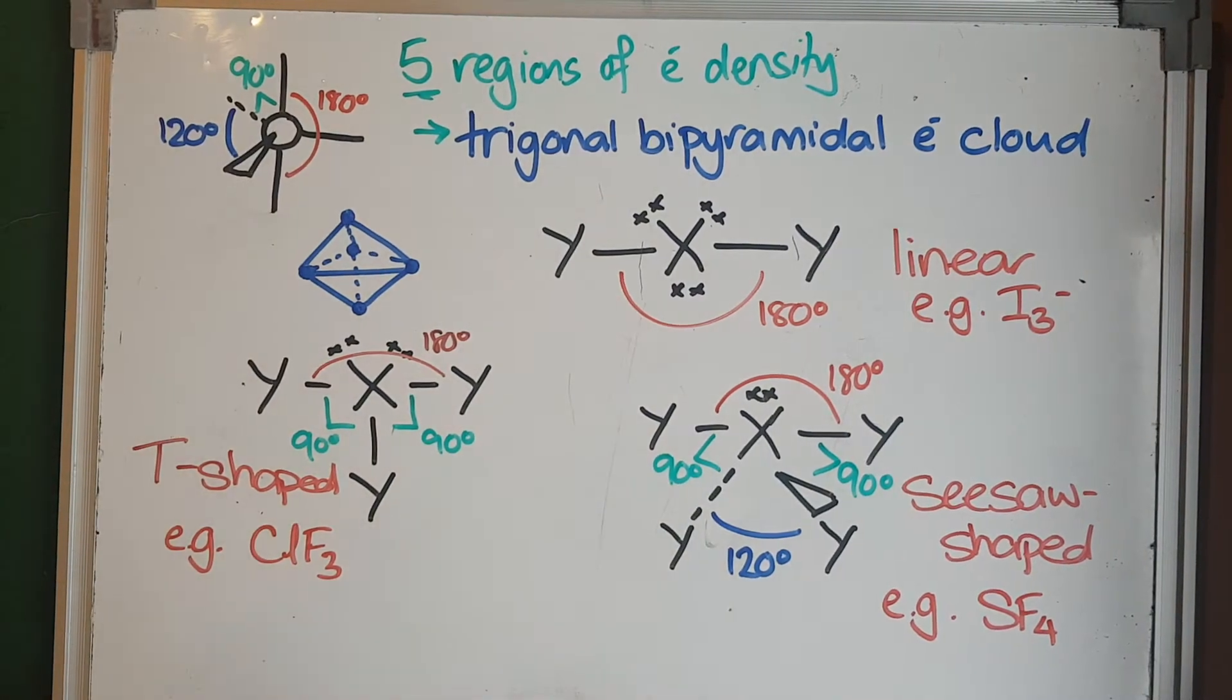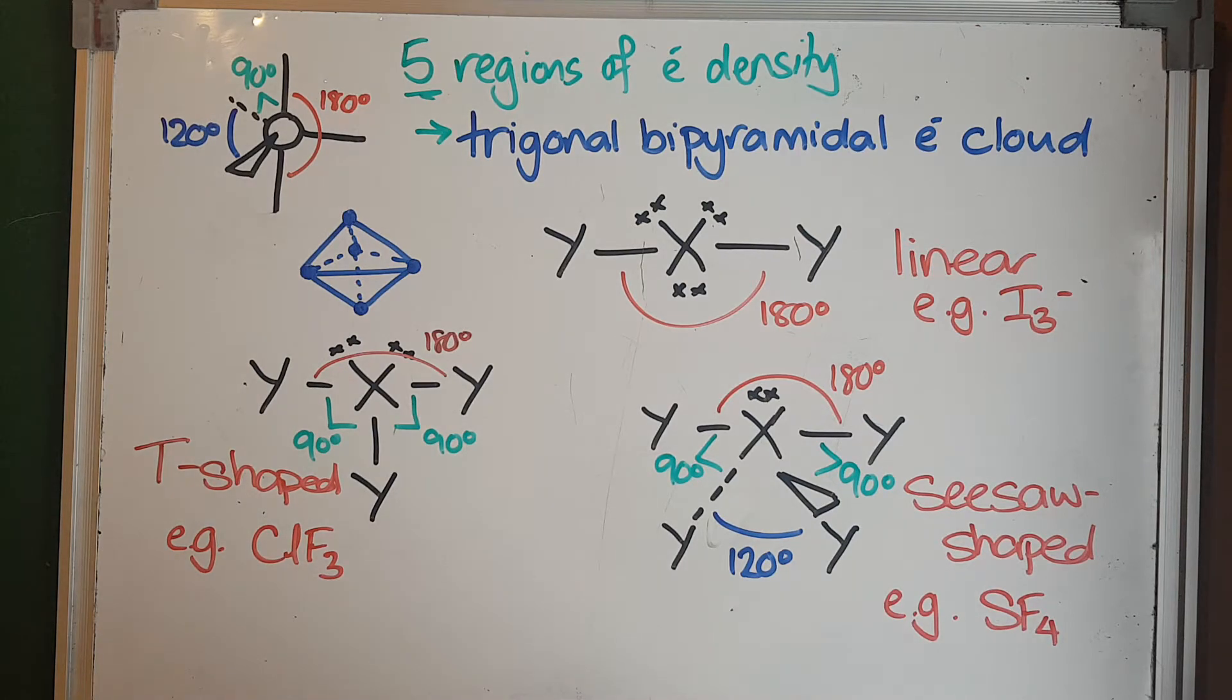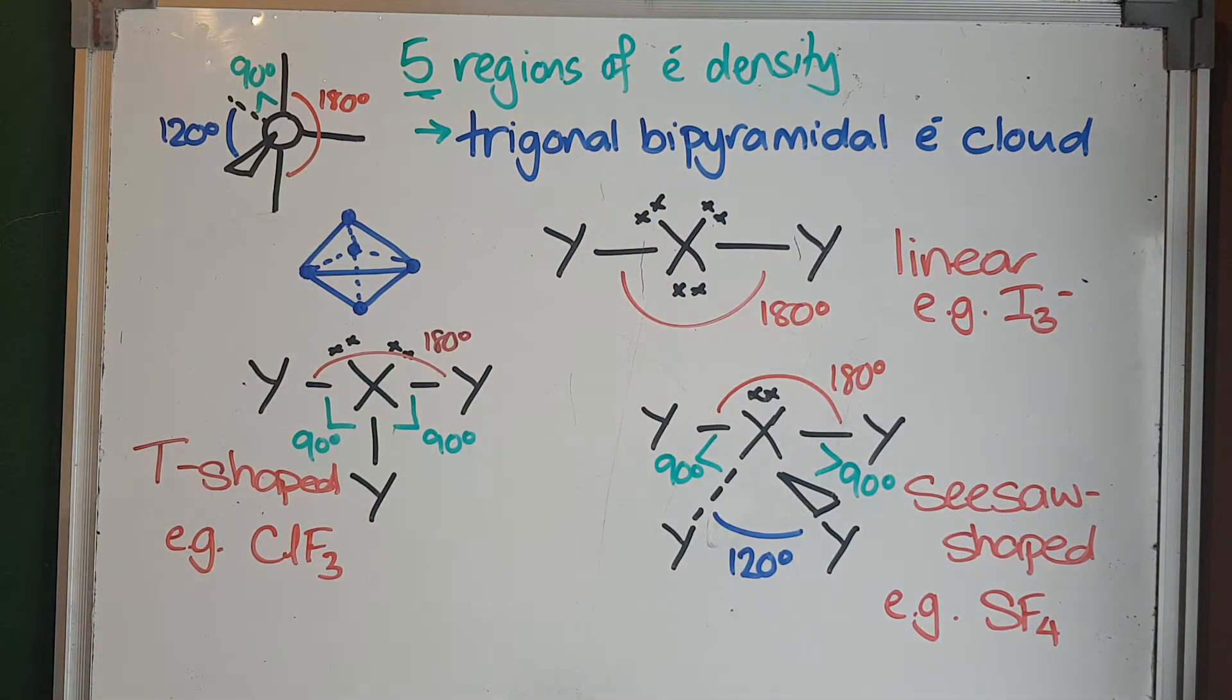In year 13, we've encountered elements that have expanded octets when we do their Lewis structures. This means there are molecules and ions that have more complex shapes that we have to learn. This video is going to be on those that have five regions of electron density, whether they're lone pairs or bonding pairs, around the central atom.